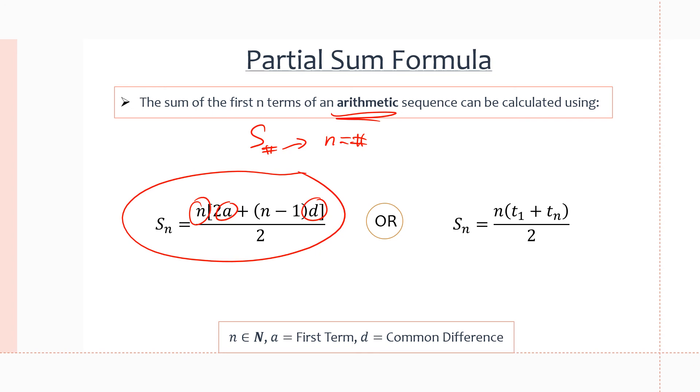And if we know the first term, t1, if we know the first term and the nth term, not the last term of the sequence, but if we know the first term of the sequence and the nth term, whatever n is equal to, we would use the second formula. Because in the second formula, we need the first term and the last term of our partial sum. And of course n, and again, you should know n, it should be the subscript of S.